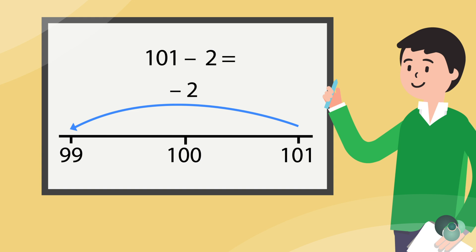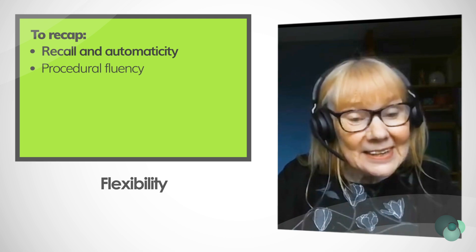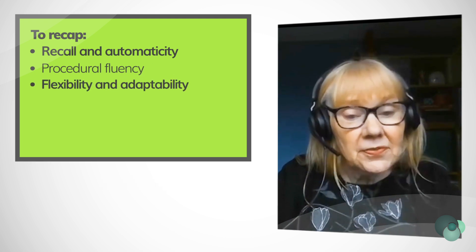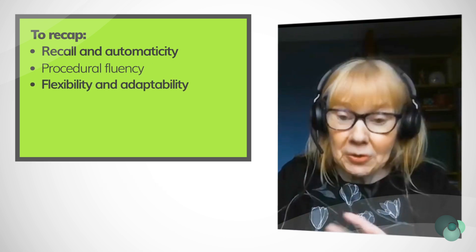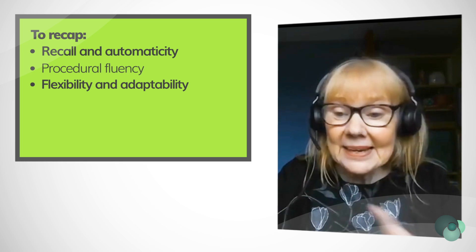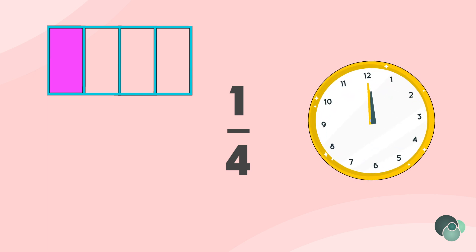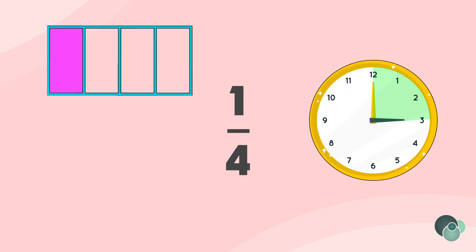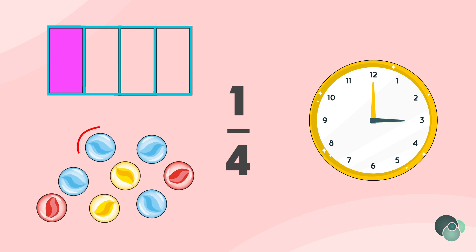There's also flexibility involved - the flexibility to move between different contexts and make connections between them. For example, the concept of one quarter could refer to a part of an area of a shape, it could refer to part of a journey, part of a measurement of time, or part of a set of objects.